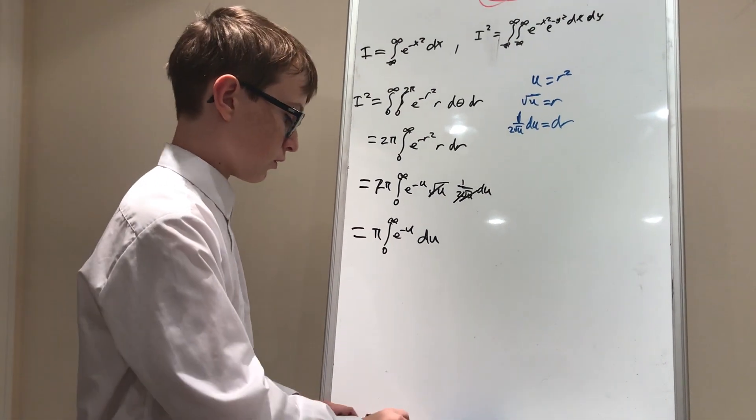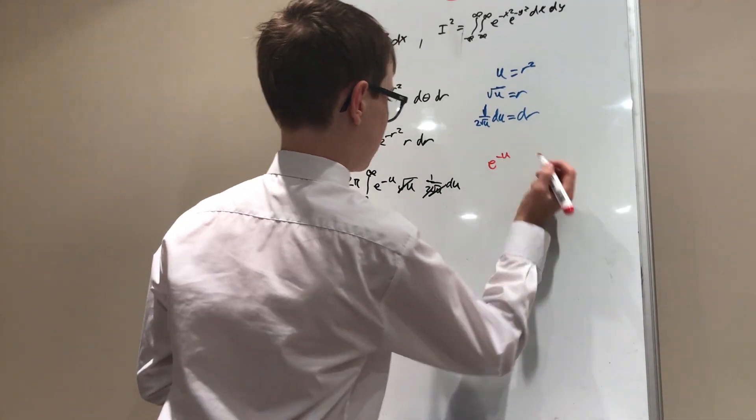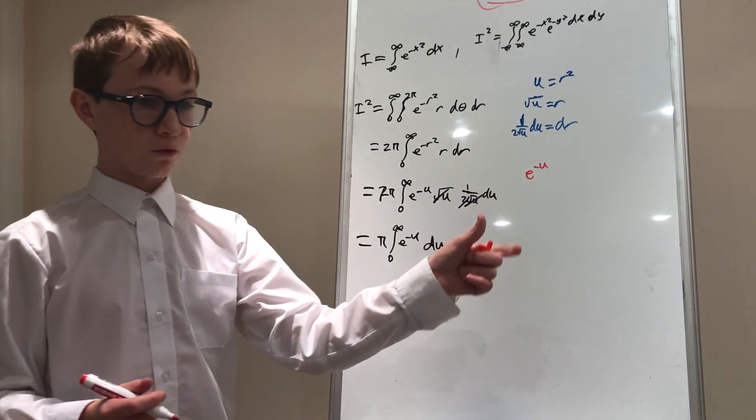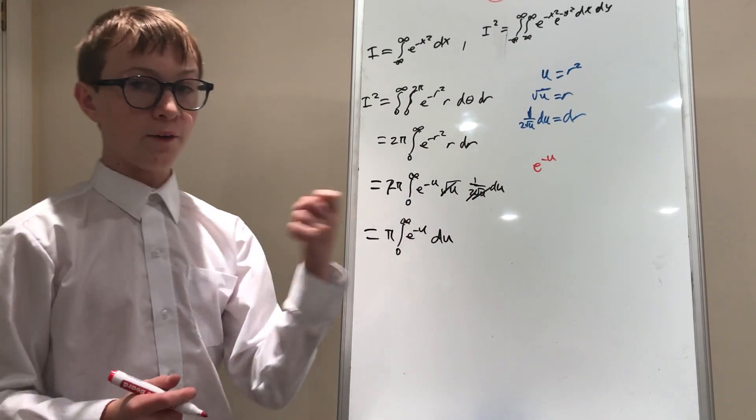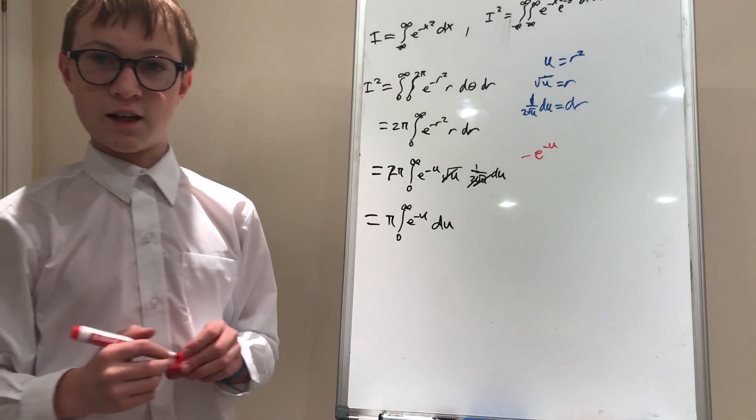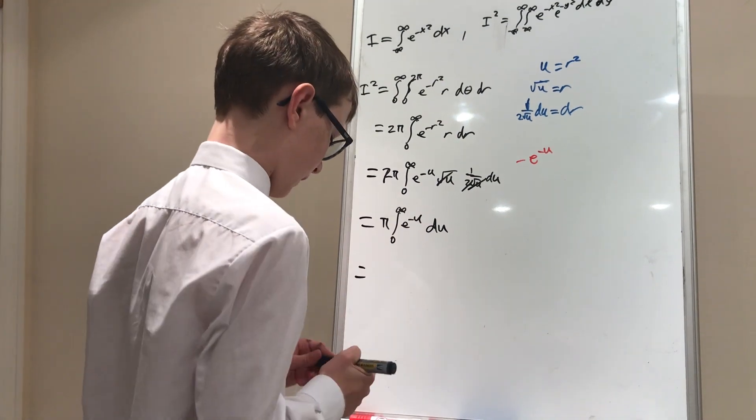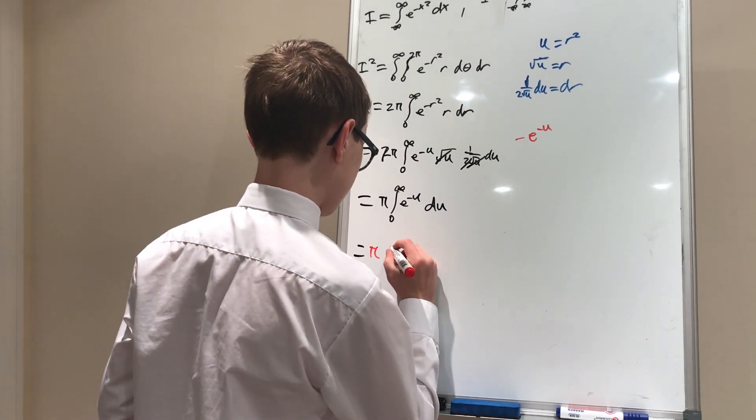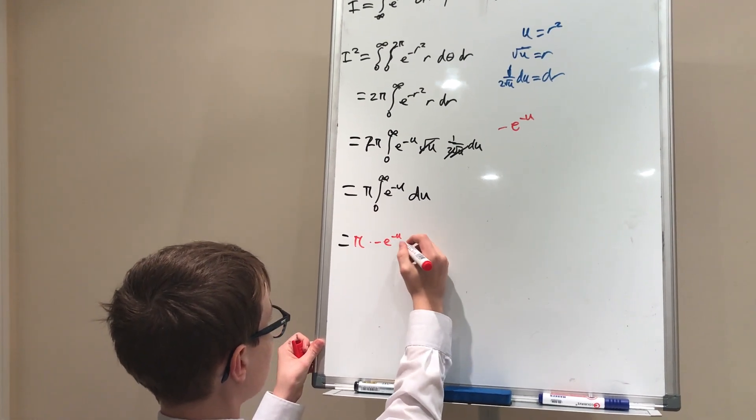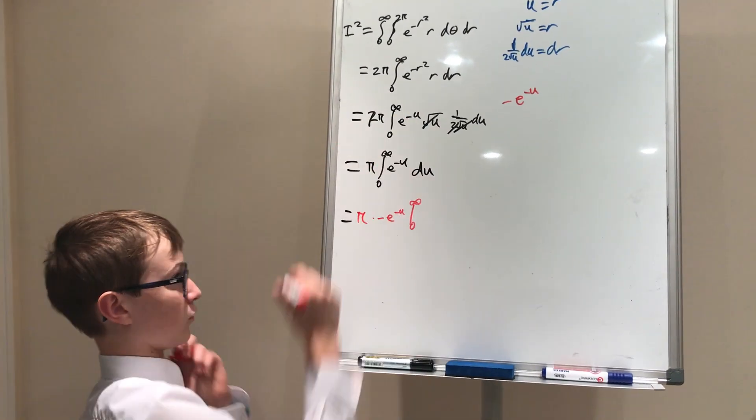This is a simple integral. To do this, we just have to do the chain rule, but backwards. So e to the negative u, well, the integral of e to the negative u is the integral of the outside, which is e to the negative u, and then divided by the derivative of the inside, which is negative one. So it says negative e to the negative u. So actually, we get this equals pi times negative e to the negative u evaluated from zero to infinity because those are the bounds of our integral.